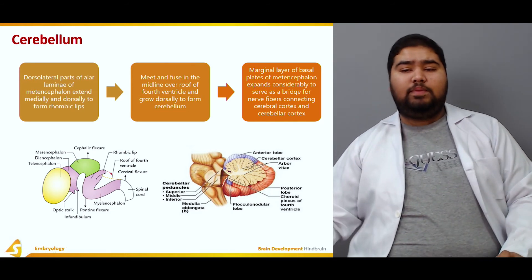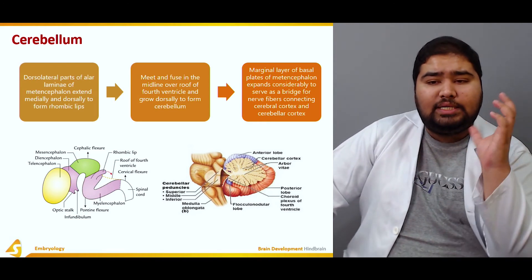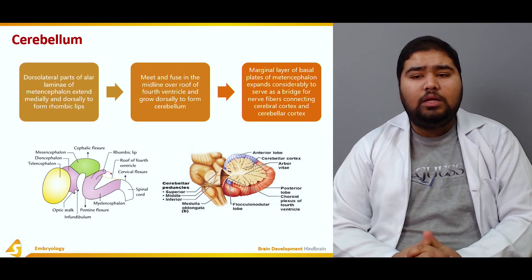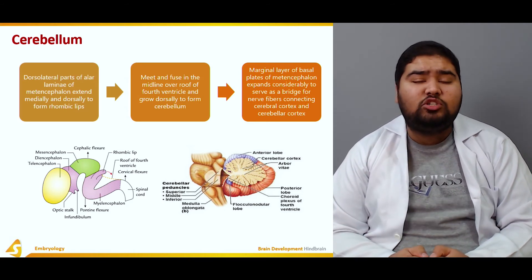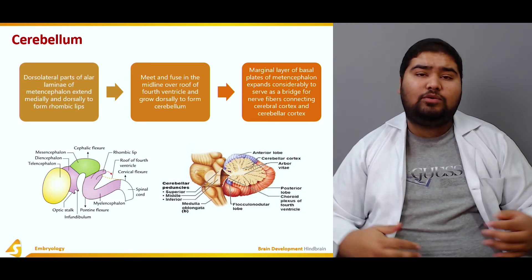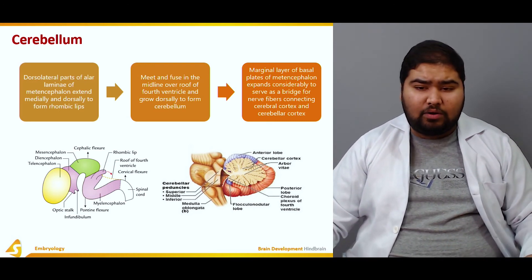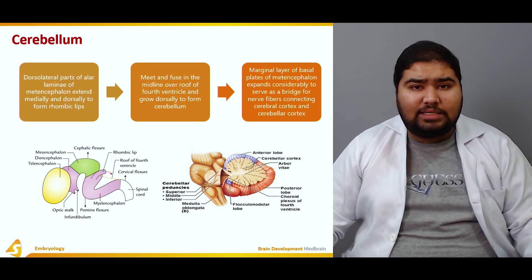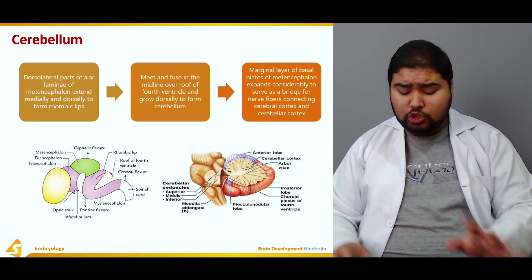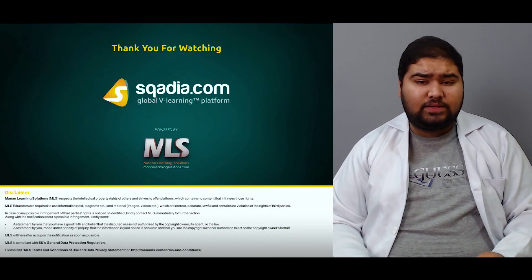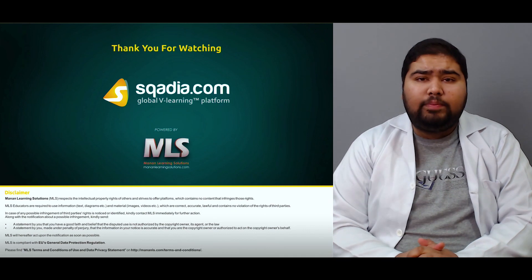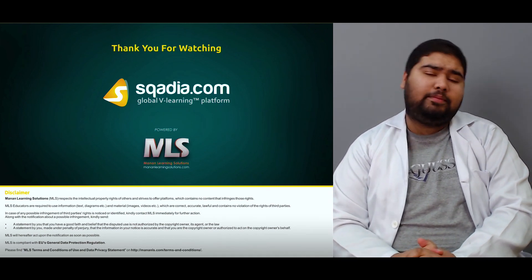The marginal layer of the basal plates of the metencephalon expands considerably. This serves as a bridge of nerve fibers connecting the cerebral cortex and the cerebellar cortex, derived from the metencephalon. In summary, we discussed the development of the hindbrain — how the rhombencephalon forms the pons, the cerebellum, and the medulla oblongata.